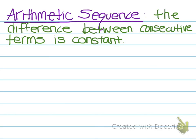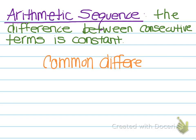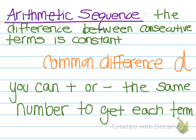A sequence of numbers can be described as arithmetic. This is where the difference between consecutive terms is constant. We call this the common difference, and we use the letter D to represent that common difference. Basically, this means that you can add or subtract the same number to get each term.